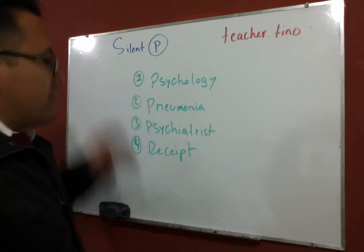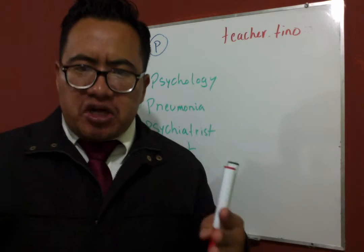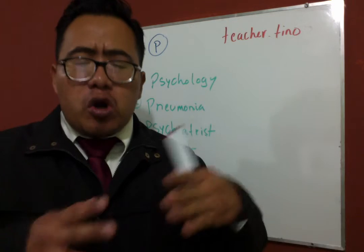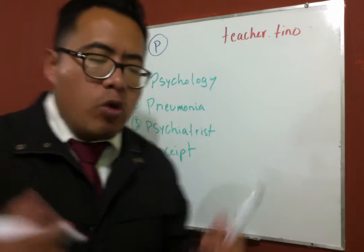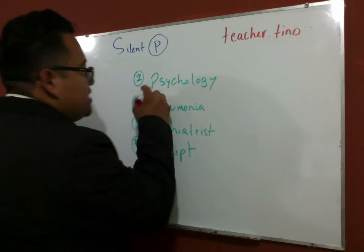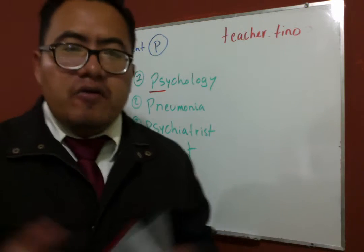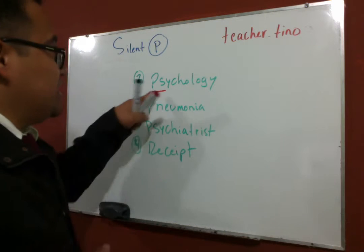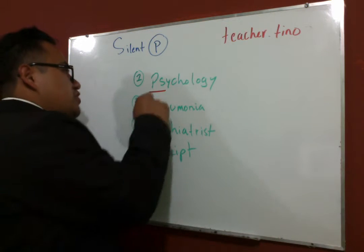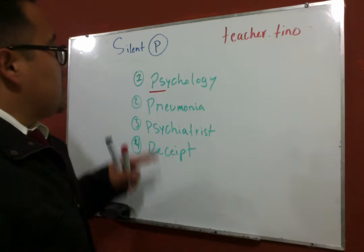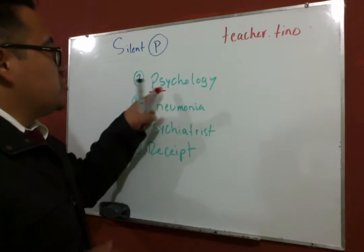Remember that English is a mixture of other languages, and sometimes it borrows certain words. In this case, for example, this comes from Greek. In Greek it actually has a sound, but when it was imported into English it doesn't have a sound, so we only use the S.